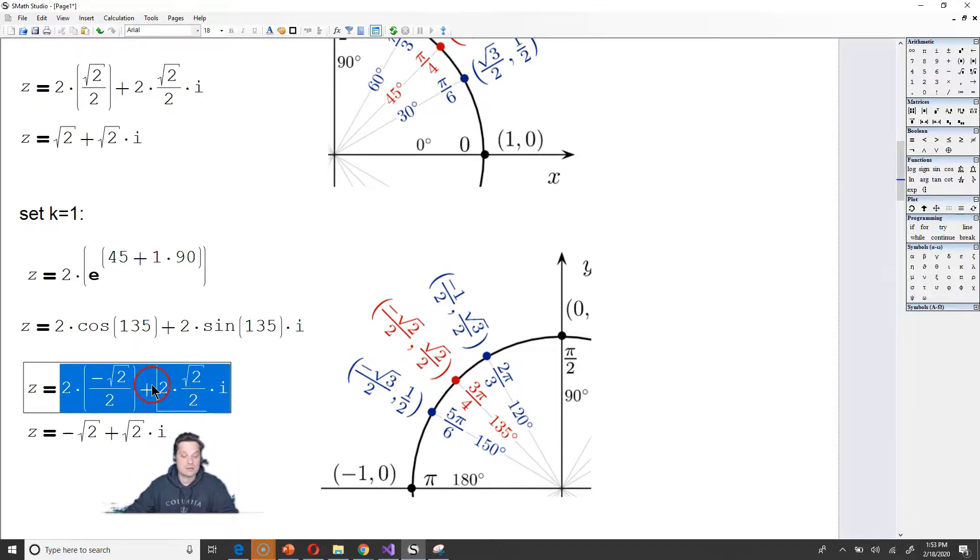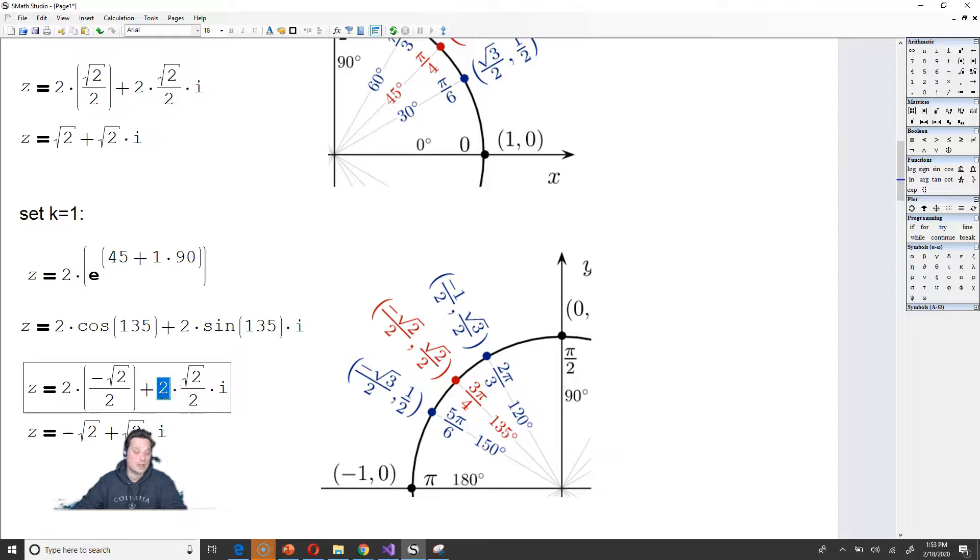Cosine of 135 you replace with negative root of 2 over 2. And the sine of 135 you replace with the root of 2 over 2. As before, like this 2 will cancel with that 2, and then this 2 will cancel with that 2, leaving the root of 2 positive in that position, and the negative root 2 in that position. So that's our next root right here.